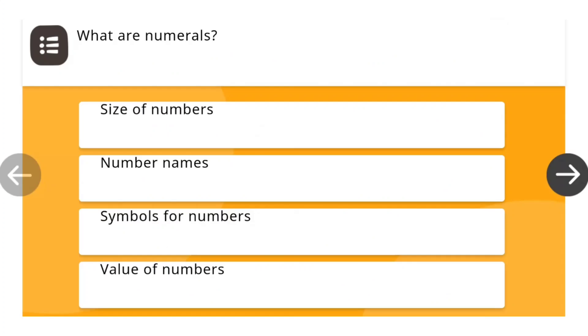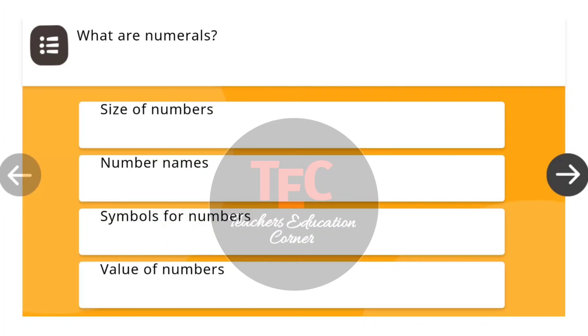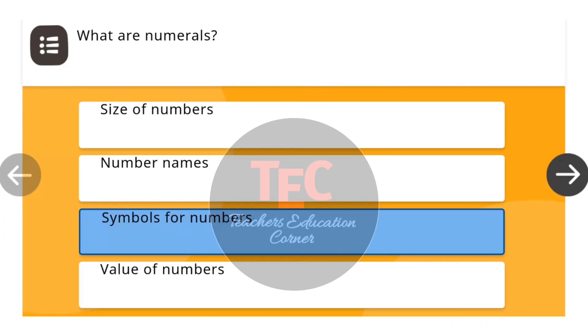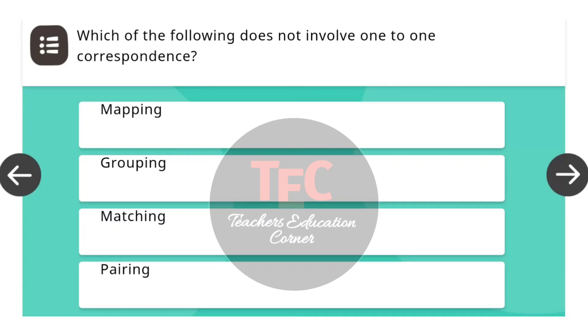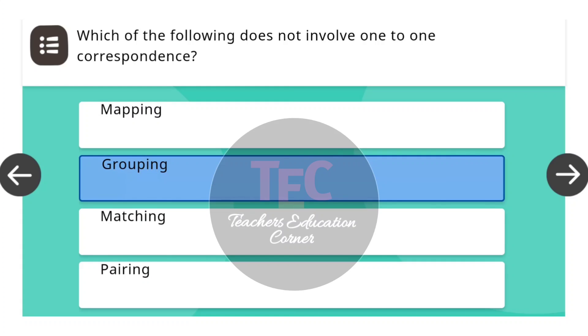First question: What are numerals? The correct answer is symbols for numbers. Next question: Which of the following does not involve one-to-one correspondence? The correct answer is grouping.